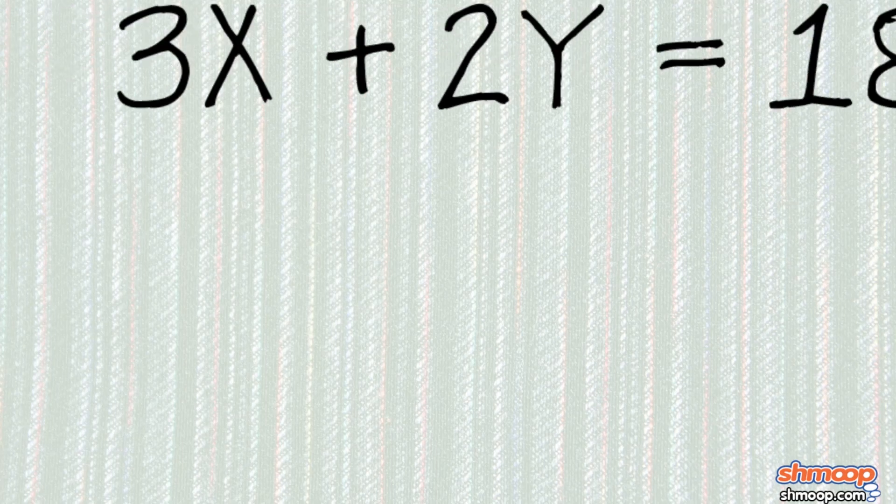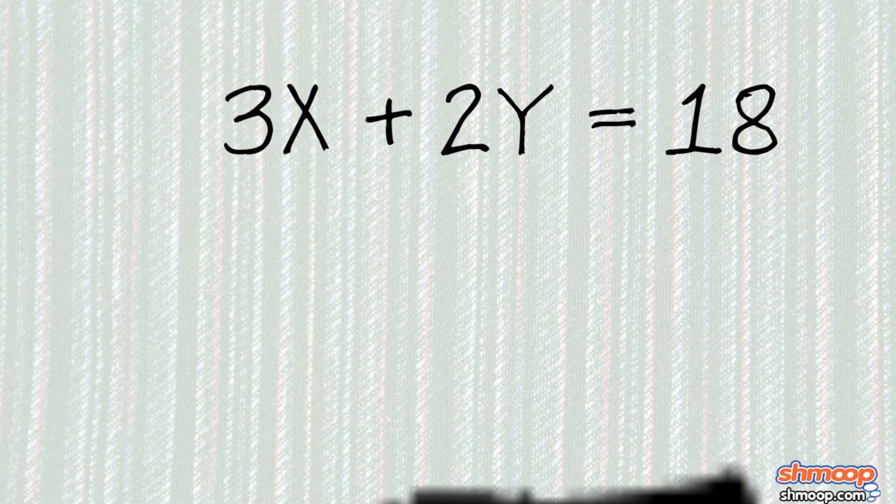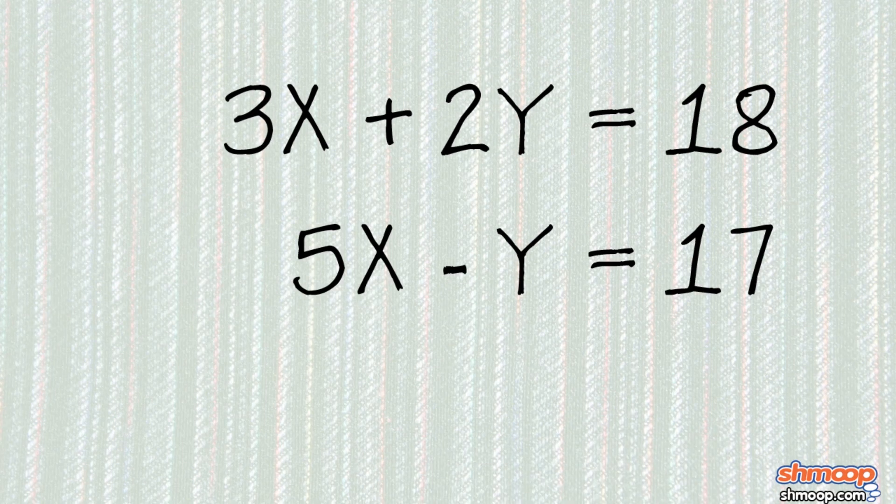Say we've got two linear equations, 3x plus 2y equals 18, and 5x minus y equals 17.